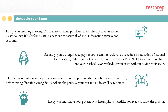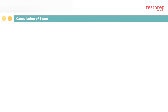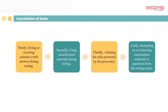Fourth, you must have your government-issued photo identification ready to show the proctor. Reasons for cancellation of exam include: first, giving or receiving assistance with answers during testing; second, using unauthorized materials during testing; third, violating the rules presented by the proctor; fourth, attempting to remove examination materials or questions from the testing center.